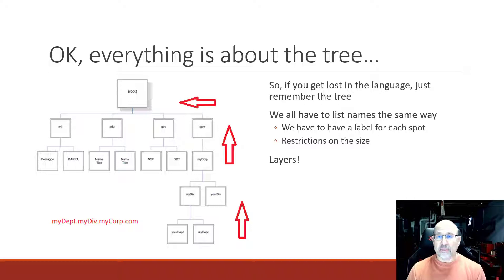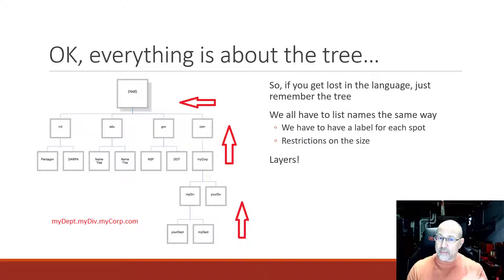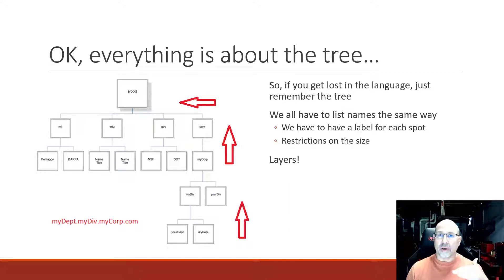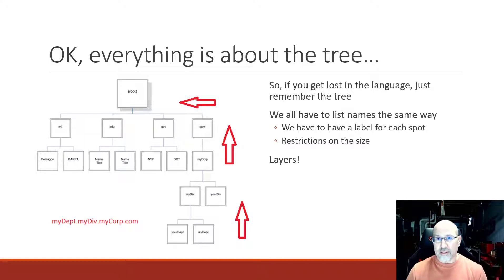Some key items here is that every level in the tree has to be identified and has to be part of the domain name. We work our way from the bottom to the top, or the top to the bottom — whichever makes more sense to you. You have a label for each spot, and we've got to acknowledge all of these layers.